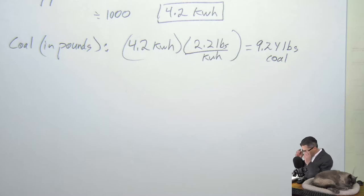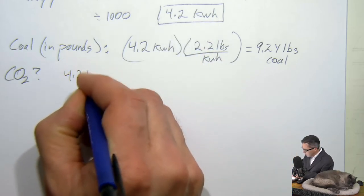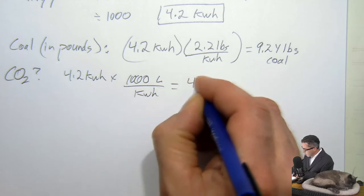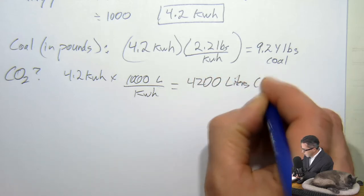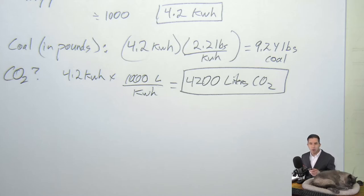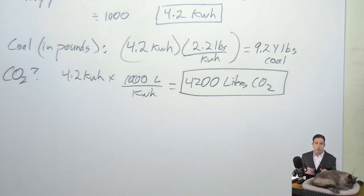So that's what's required to make our 12-pack of cans. If you throw them away, you've got to burn that much coal and produce that much CO₂ to make another 12. But if you recycle them, they can just melt them down and make new ones, and it only takes about five percent of that.